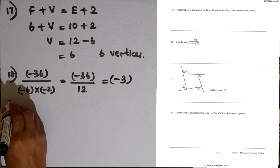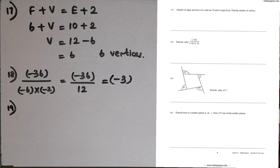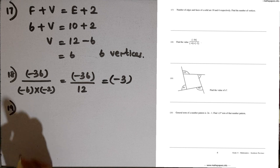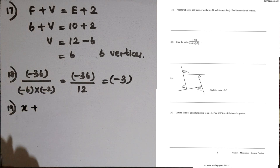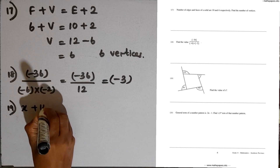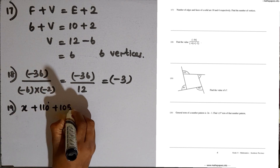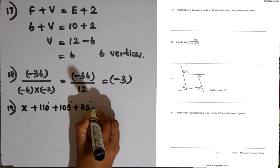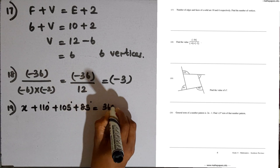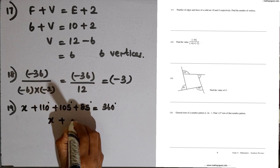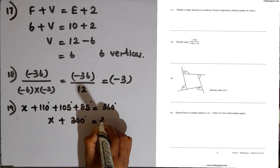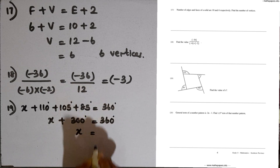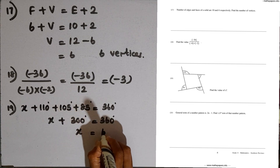Question number 19: we are given a quadrilateral. Find the value of x. The exterior angle sum of a quadrilateral is 360 degrees. So x plus 110 plus 105 plus 85 equals 360 degrees. The sum of the known angles is 300, so x equals 360 minus 300, which is 60 degrees.